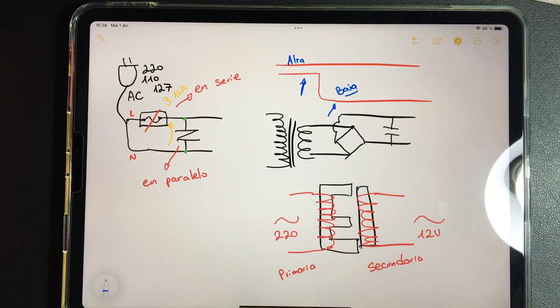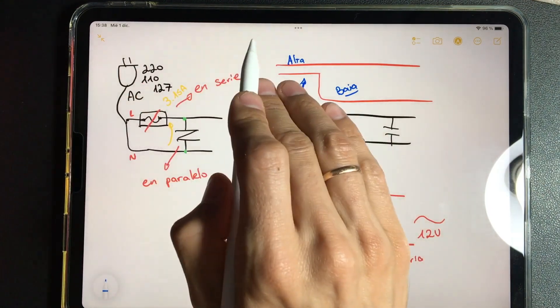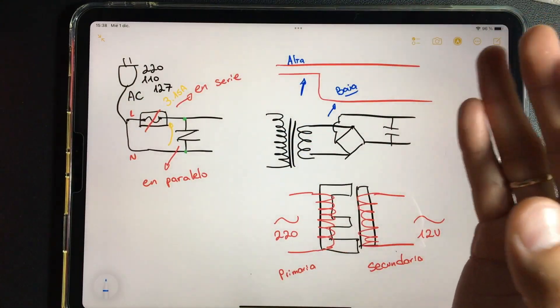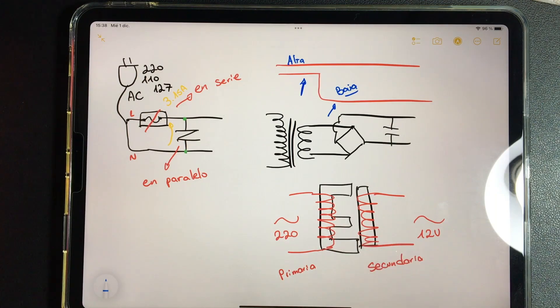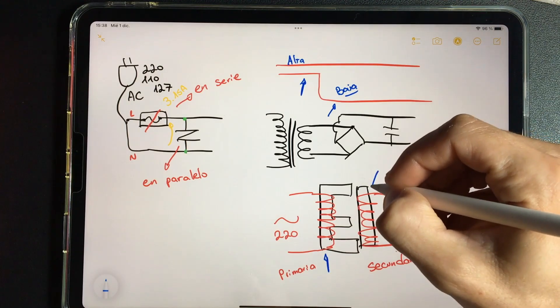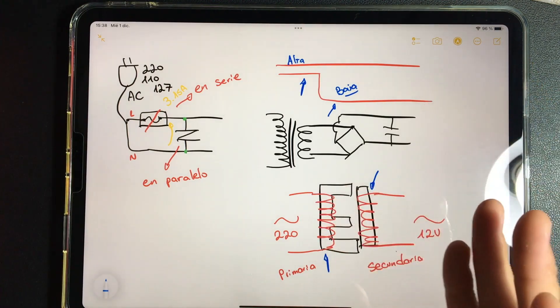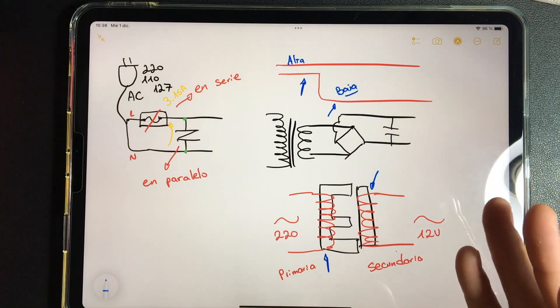The same principle of operation has the transformer. High pressure for a thin pipe, when we find a thick pipe, low pressure. That is why the copper winding on the primary side is much finer than the winding on the secondary side, which has to end with low pressure or low voltage.